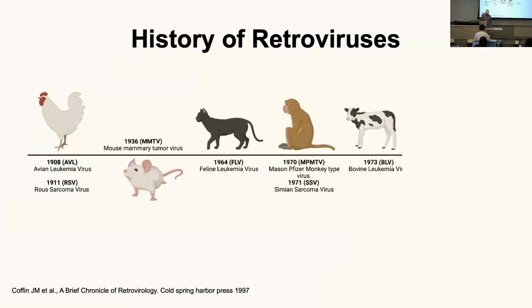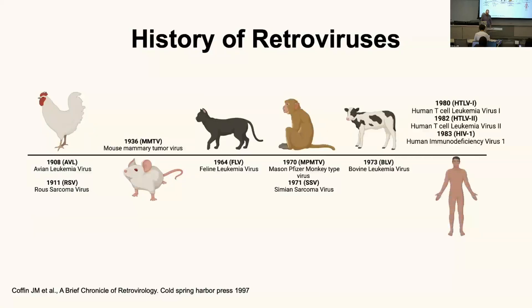Following those initial discoveries, many retroviruses have been found in all sorts of different animal models, including mites, cats, monkeys, and cows. Our history as humans with retroviruses goes back a really long time, but we didn't know about it until 1980, when the first human retrovirus was isolated at the Gallo lab at NIH. This was from a patient with T-cell leukemia, and they named it human T-cell leukemia virus. A couple years later, studying more leukemia patients, they found a closely related HTLV-2. This all happened in the early 80s, around the time AIDS started manifesting in the population, and this culmination of events led us to discover HIV.